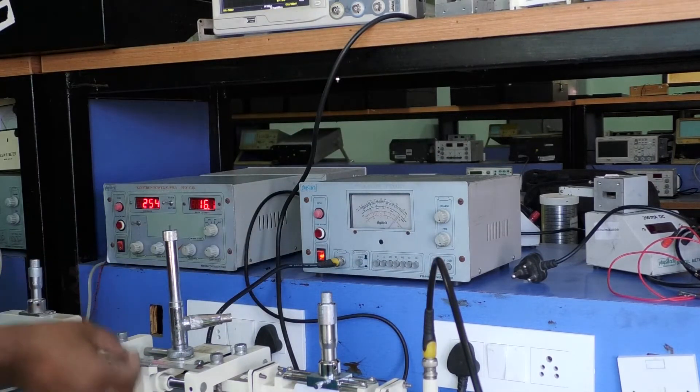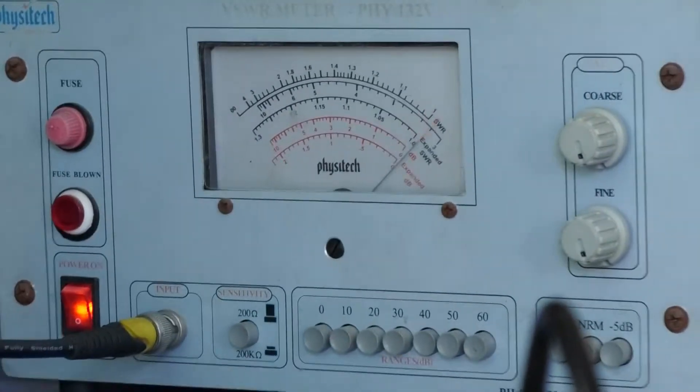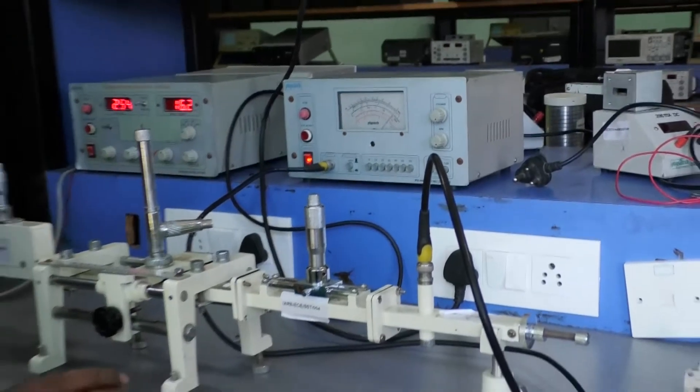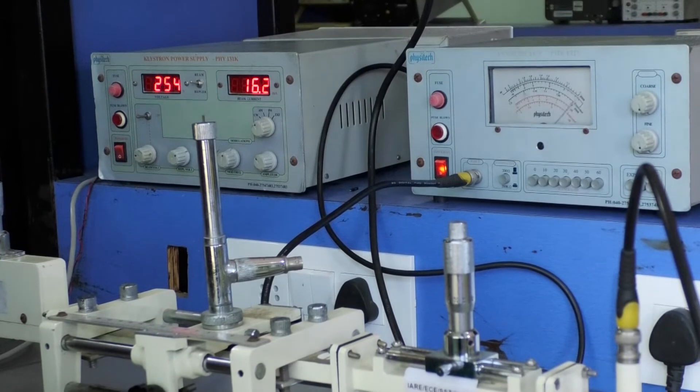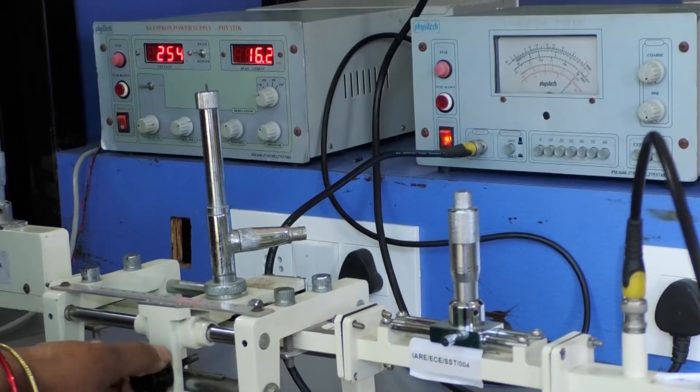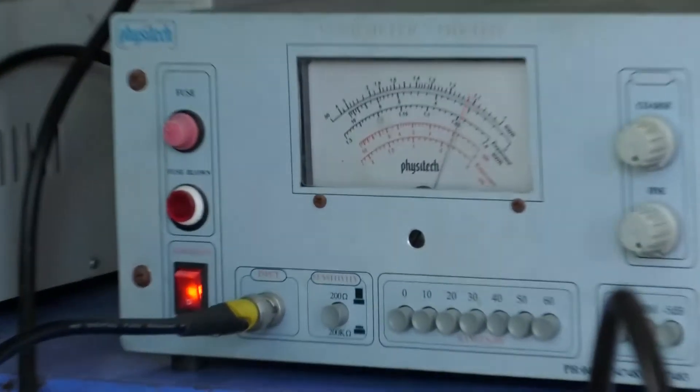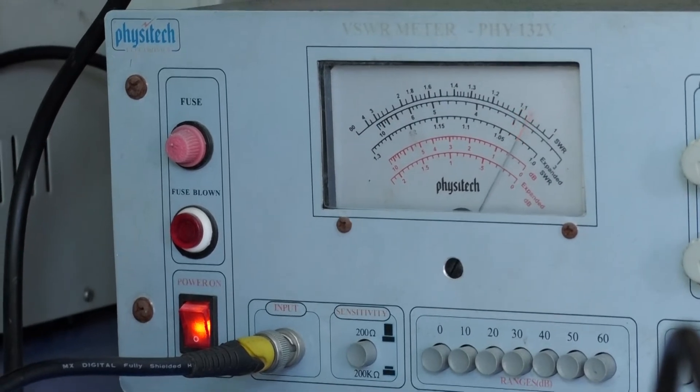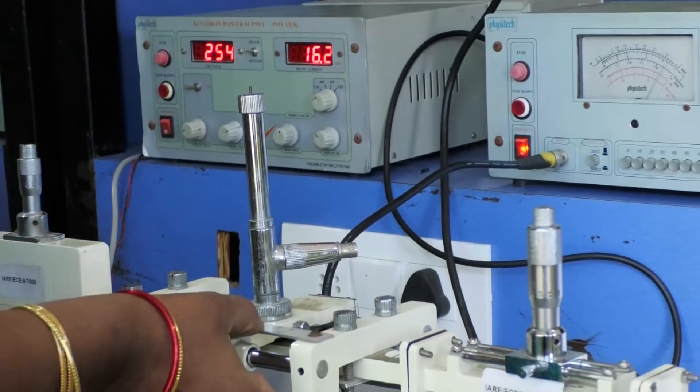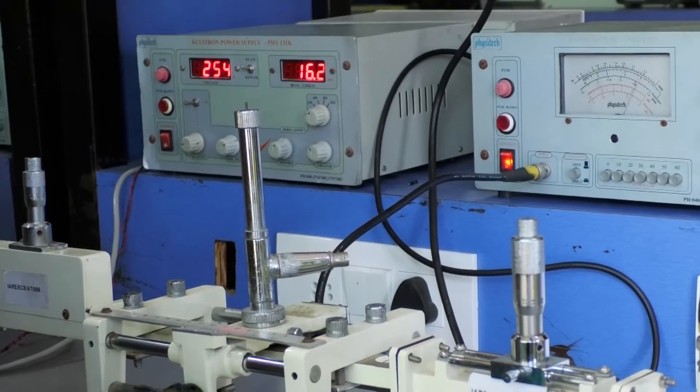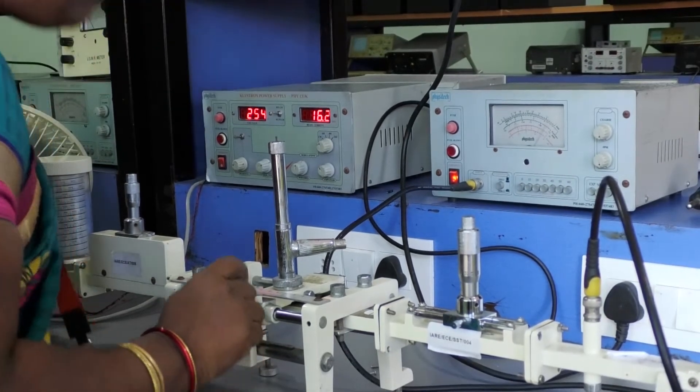Now move the probe along the slotted line on left side once and again on right side to get the maximum deflection on VSWR meter. In the first case, we move the probe on left side. Then we observe the maximum deflection. At that point, measure the value of D1. D1 is where the vernier scale coincides with the normal scale. Now the value of D1 is 11.5.